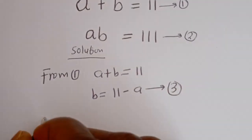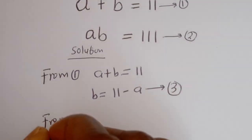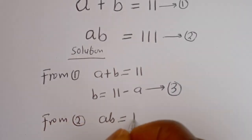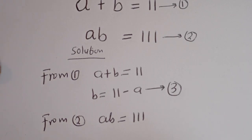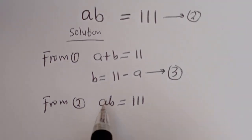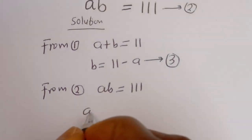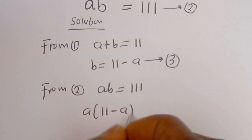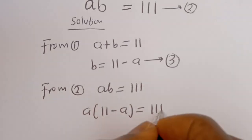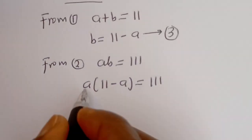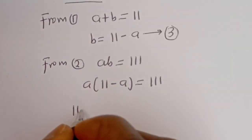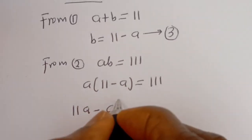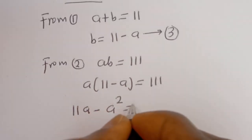Also from equation 2, AB is equal to 111. Now let's substitute for B: we have A times (11 minus A) is equal to 111. Then let's open the bracket: A multiplied by 11 gives 11A, minus A multiplied by A, which is A squared, is equal to 111.